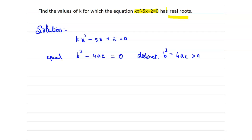Now compare the given equation with the general form of a quadratic equation ax² + bx + c = 0. Here a = k, b = -5 and c = 2.